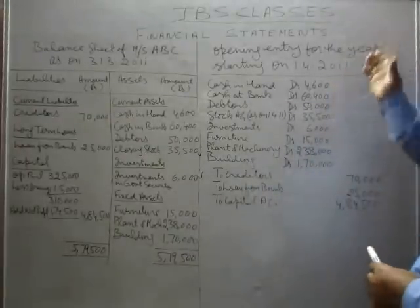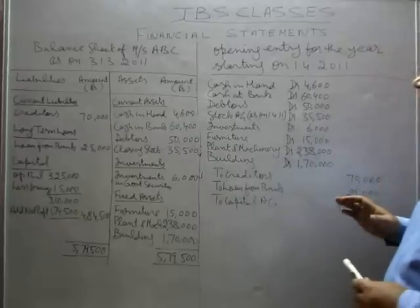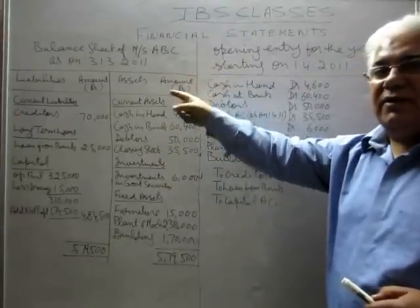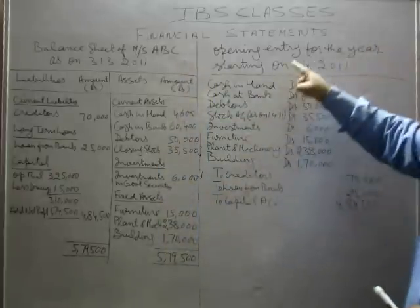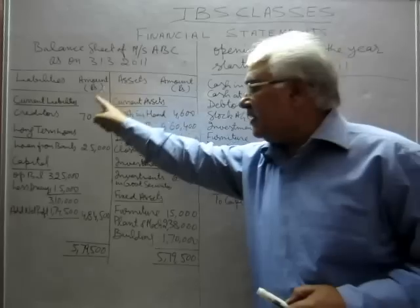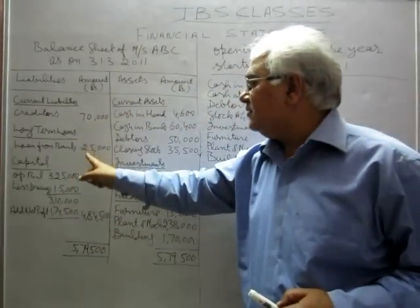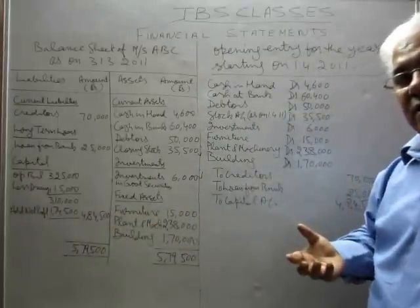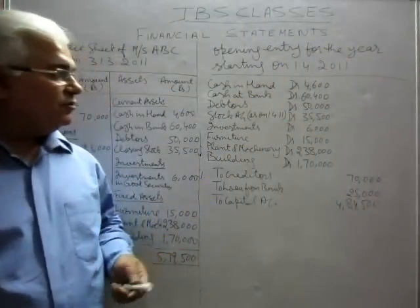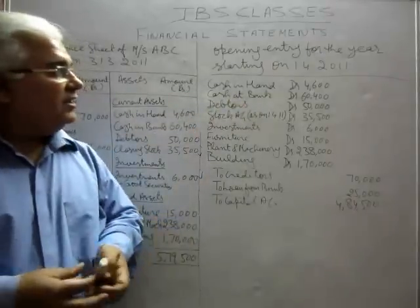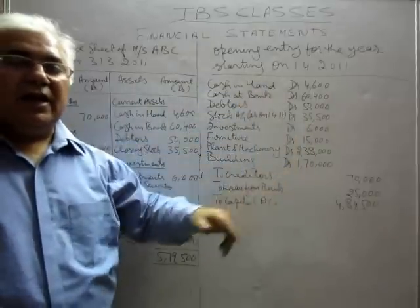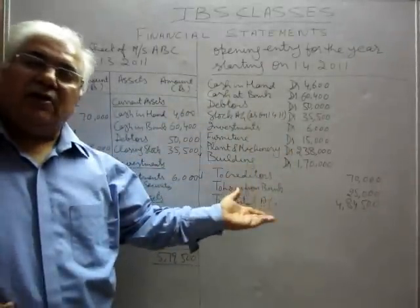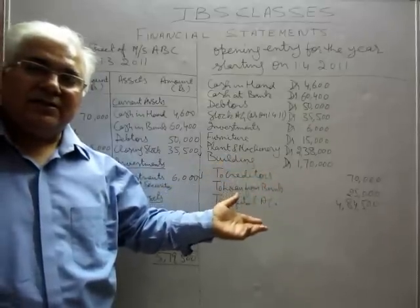This is the opening entry for the year 1/4/2011. All the assets in the balance sheet of the previous year — that is the balance sheet as on 31/3/2011 — have been debited. All the accounts on the liability side of the previous year's balance sheet — like creditors, loan from bank, and capital — have been credited. This means we have brought forward the accounts pertaining to assets and liabilities to the new books, and from this posting will be made in the ledger. New transactions will start from here.